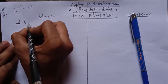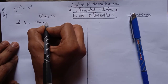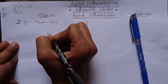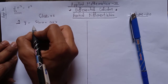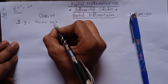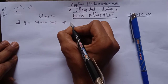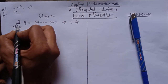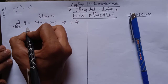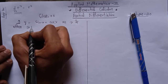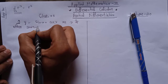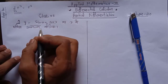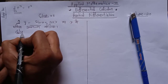In basic differentiation, a question would be given like: differentiate y = sin x + cos x with respect to x. So guys, you were asked to find dy/dx — that is, differentiation of y with respect to x. This is what we call normal differentiation.